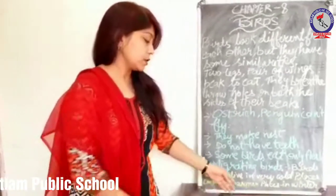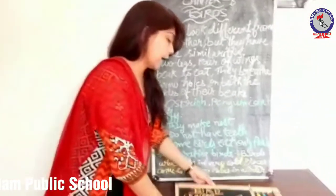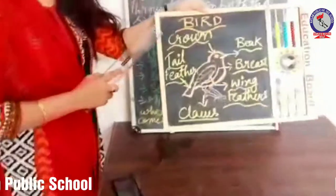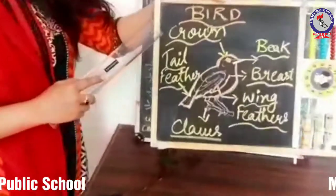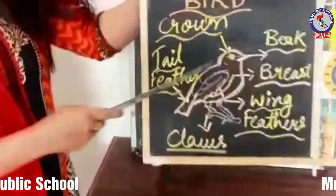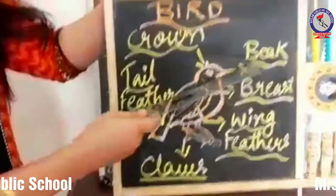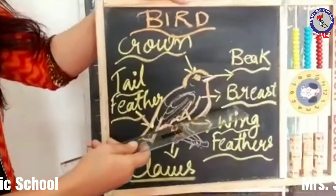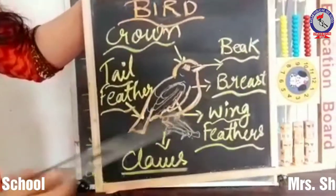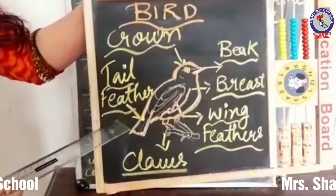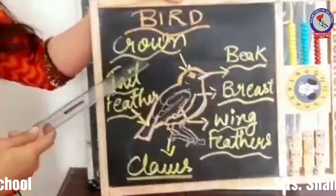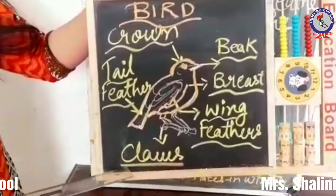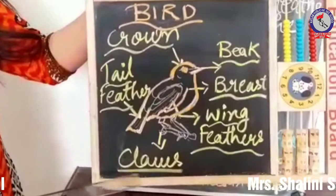Now we will see the diagram of a bird. This is the diagram of a bird. This is the beak of a bird. This is the breast, wing feathers, tail feathers, and crown. These are the claws of a bird.